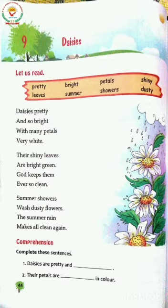'Their shiny leaves are bright green.' Jo unke shiny leaves hoti hai, green color ki, aap ko leaves dikh rahi hai, woh bright green hai, chamkili hai. 'God keeps them ever so clean.' Bhagwan ji unko hamesha saaf rakhta hai.